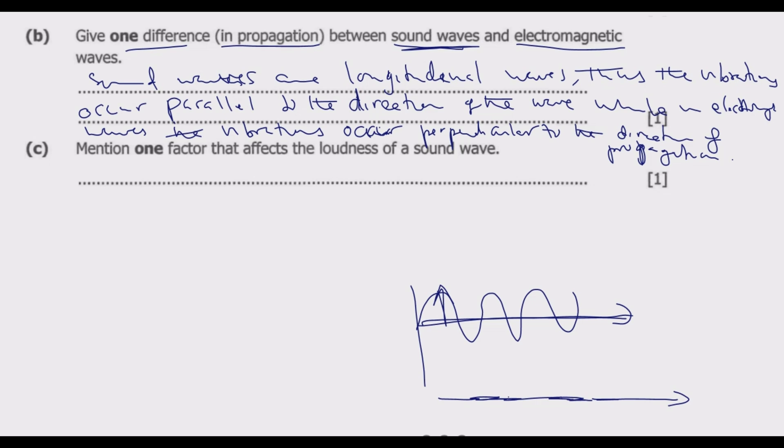Question C: Mention one factor that affects the loudness of sound. The loudness of sound is affected by the amplitude. The higher the amplitude, the louder is the sound. If the amplitude is smaller, then the loudness will be low.